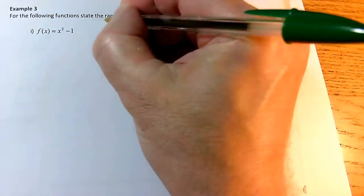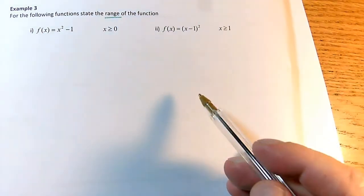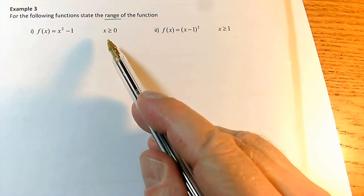We've got some more examples where we're looking at the range of the function, and we're given the equations. What's different is that now we're going to have some restricted domains.